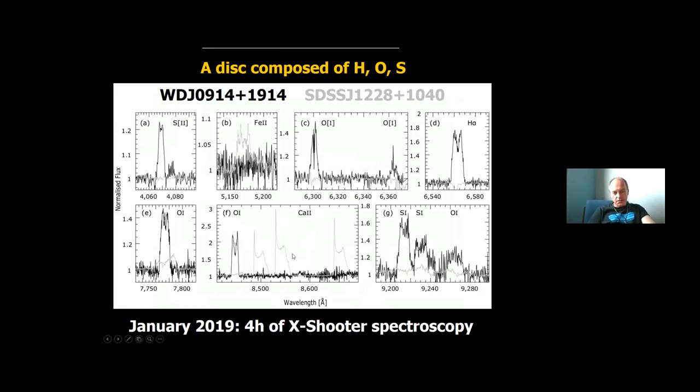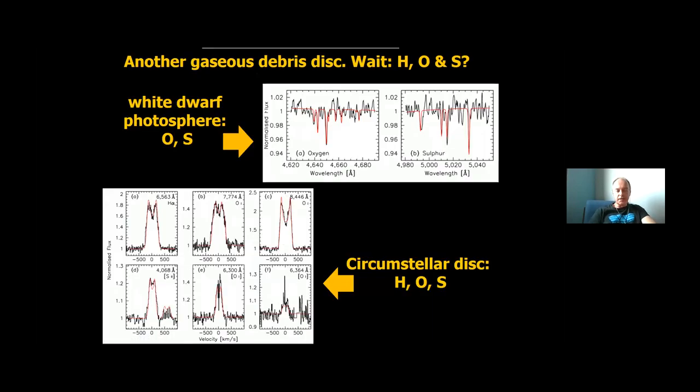The observer approach is we need more data, which we got last January and shown here in black are the emission lines from this new system. And for comparison, as the prototypical gas disk debris disk around the white dwarf, which has the strong calcium lines, iron lines. We detect neither calcium nor iron in this new system, but we see oxygen, hydrogen, and several lines of sulfur. So just volatiles.